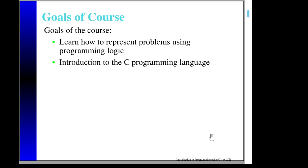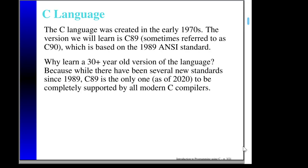The first of these is probably the more difficult to learn. The C language was originally created in the early 1970s by Dennis Ritchie. The version we're going to learn is often referred to as C89 or sometimes C90, and it's based upon the 1989 ANSI standard.